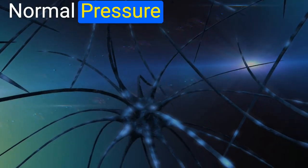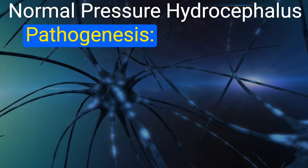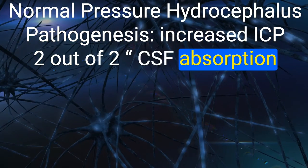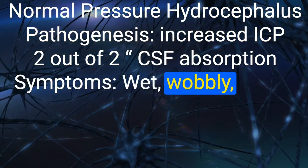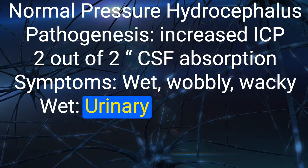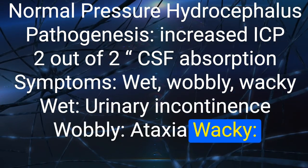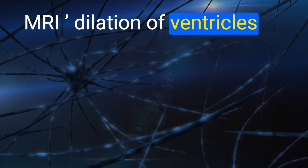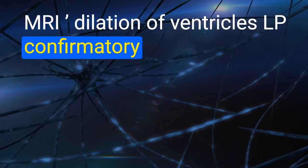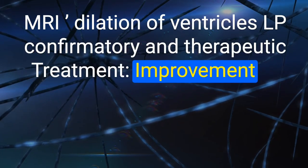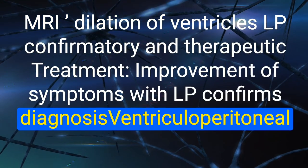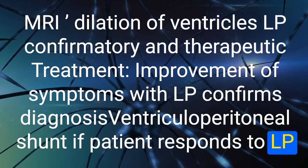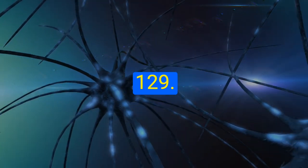128. Normal pressure hydrocephalus pathogenesis: increased ICP due to decreased CSF absorption. Symptoms — wet (urinary incontinence), wobbly (ataxia), wacky (dementia). Diagnosis: CT/MRI showing dilation of ventricles; LP is confirmatory and therapeutic. Improvement of symptoms with LP confirms diagnosis. Treatment: ventriculoperitoneal shunt if patient responds to LP.